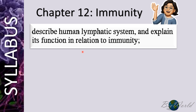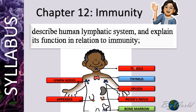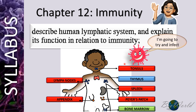In today's lesson, I'll be talking about the role of the lymphatic system in immunity. The lymphatic system is made up of a number of different organs. When we are infected, each one of these organs plays an important role in keeping the pathogen from infecting us. Let me introduce the roles of each organ.